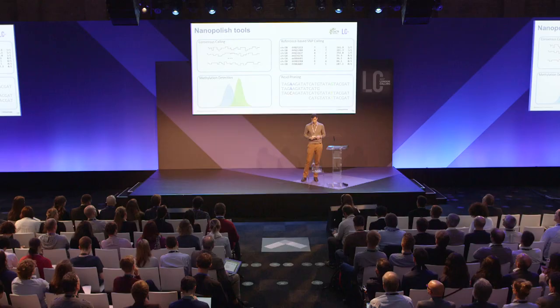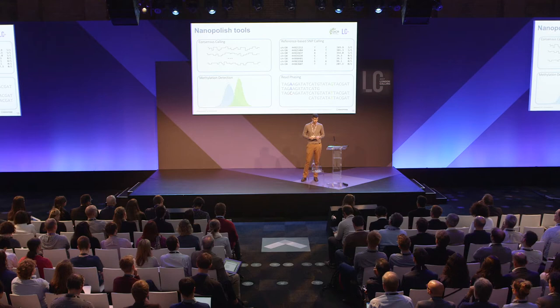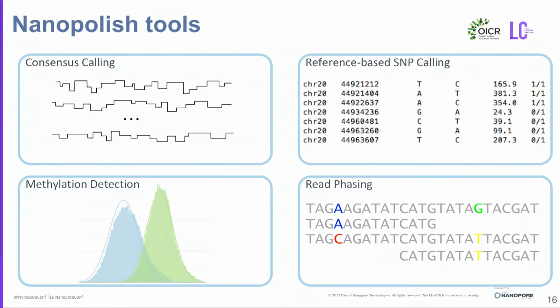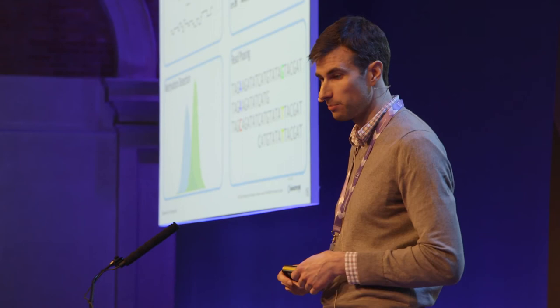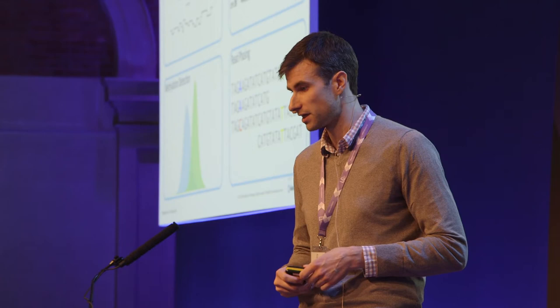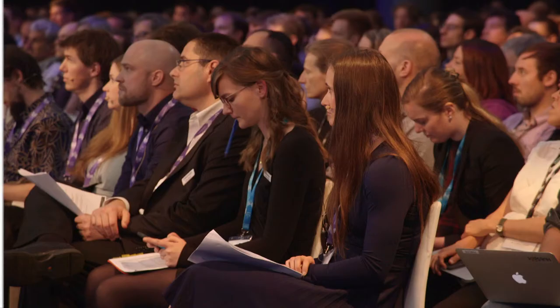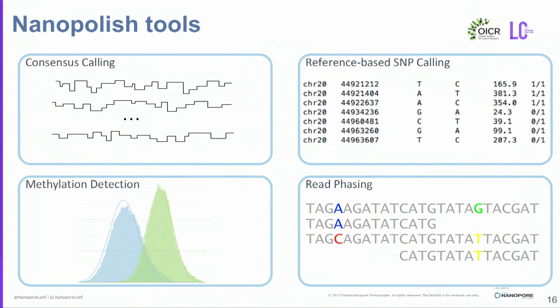Nanopolish started as a program to call consensus sequence for genome assembly using signal-based algorithms. This was a project that Nick Lohmann, Josh Quick, and I started when we first sequenced the E. coli genome and were able to assemble it to a single contig. Since then, we've developed new applications of these signal-level ideas: calling SNPs and indels with respect to a reference genome, calling modified bases — primarily 5-methylcytosine — in collaboration with Winston Timp, and more recently, phasing reads into long-range haplotypes.